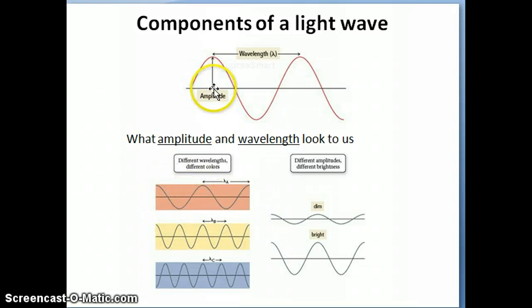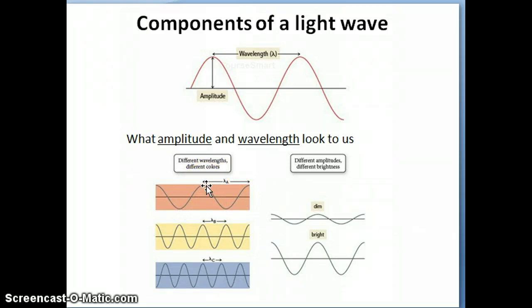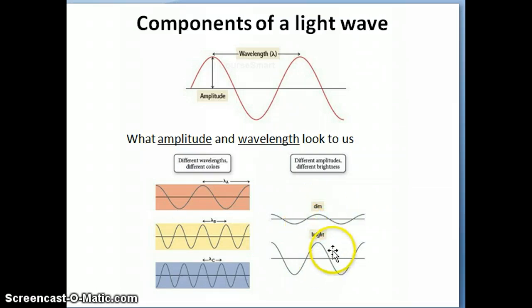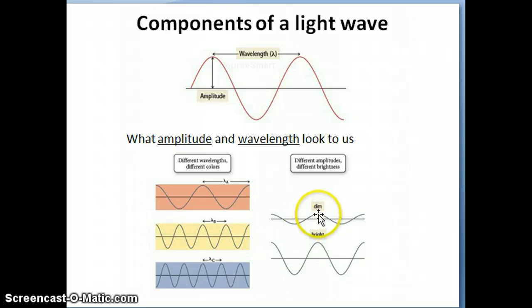Amplitude, on the other hand — remember amplitude is the distance from the middle baseline to the top — is a representation of the brightness or intensity of the light. Here I show a couple of pictures: one would be what we consider a bright light, and the other a dim light. The amplitude of the dim light wave is much smaller in comparison to the amplitude of the bright light wave.